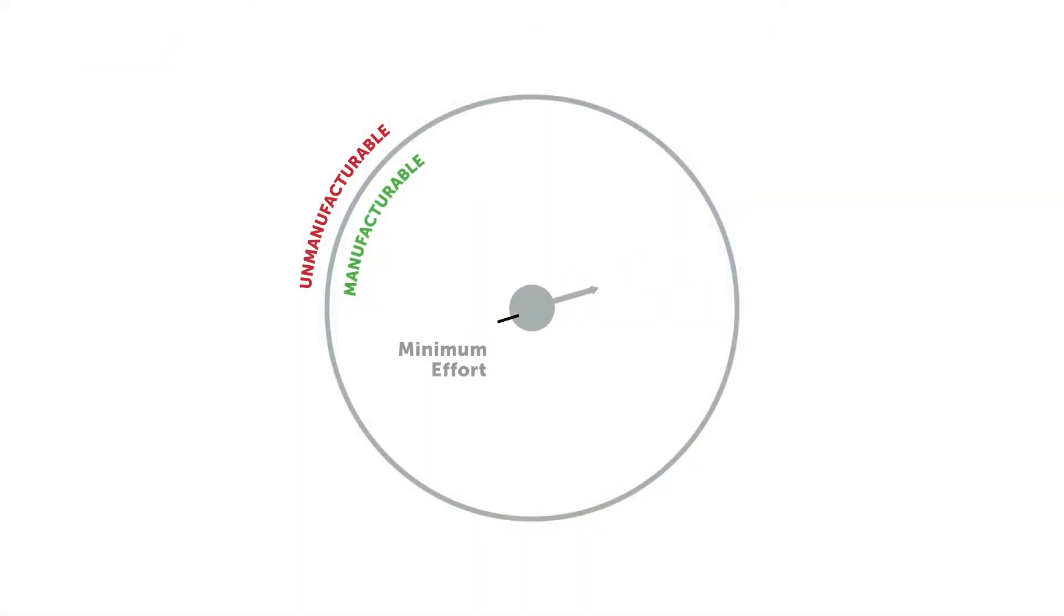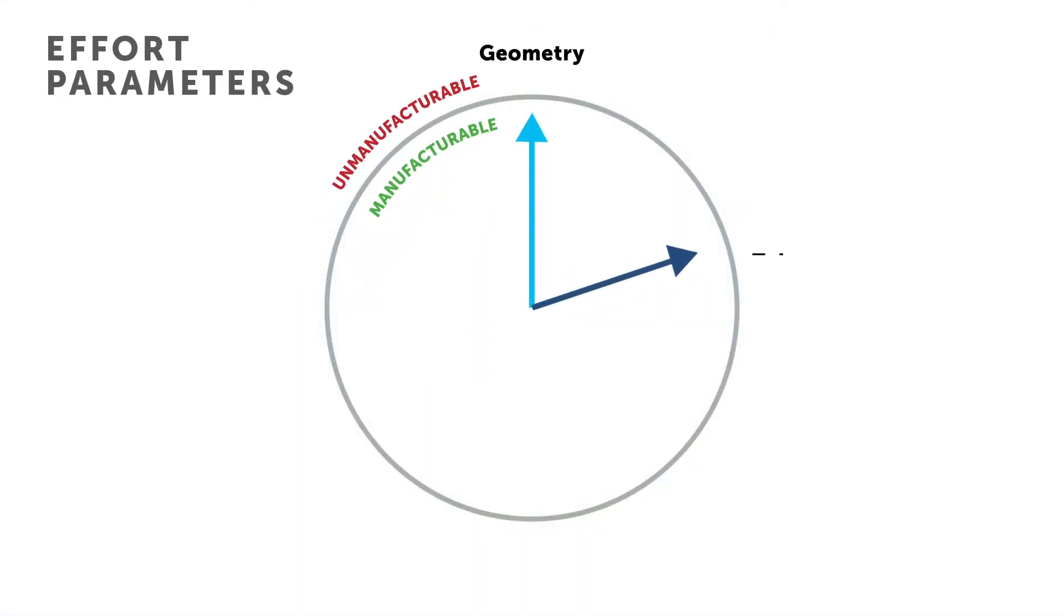Manufacturing effort is not just one-dimensional. It's based on the following five design parameters: part geometry, tolerance, part size, material, and look and feel.